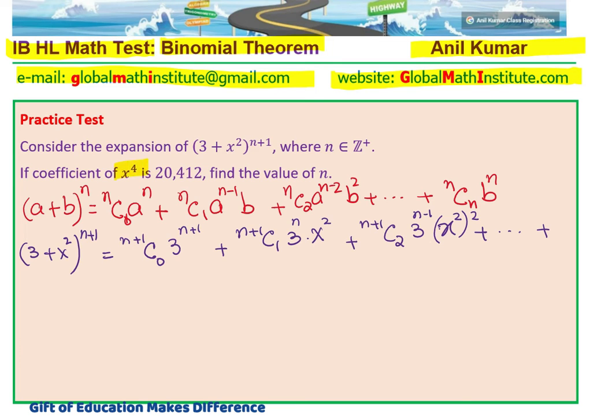We know that the coefficient of x^4 is 20,412. Now, this is x^4, and what is the coefficient? That is the coefficient. So now I can solve the question.